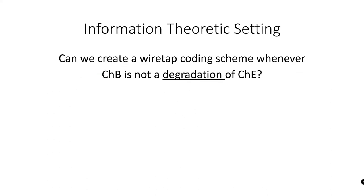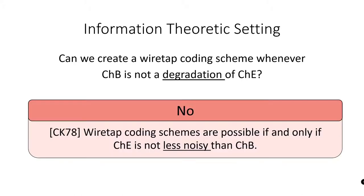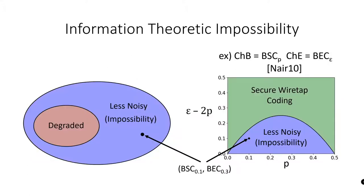In light of this, we ask whether it is possible to create a secure wiretap coding scheme whenever this is not the case. More precisely, can we create a wiretap coding scheme whenever channel B is not a degradation of channel E? Unfortunately, in the information-theoretic setting, the answer is no. Csiszár and Körner showed that wiretap coding schemes are possible if and only if channel E is not less noisy than channel B. This is a stronger requirement than degradation.